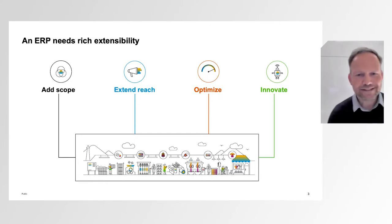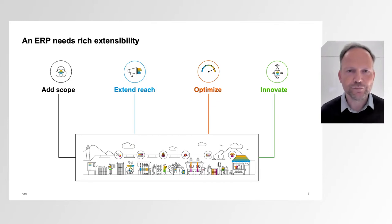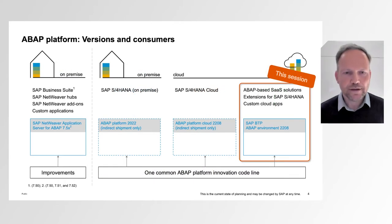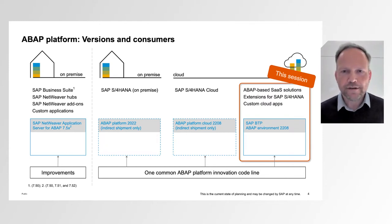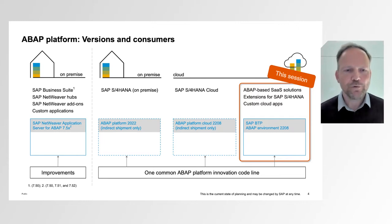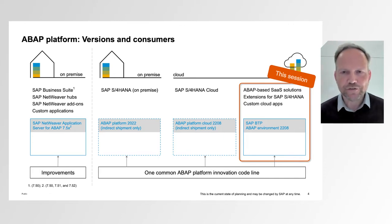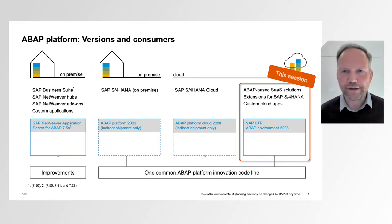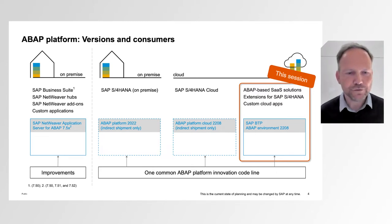I would like to start explaining the context of this session. It's all about extending ERP core applications using the ABAP platform. There is one common ABAP platform innovation code line, which is used for S/4HANA as indirect shipment and as direct shipment for our separate product on SAP Business Technology Platform. The official name of this separate product is SAP BTP ABAP Environment, but I will use the short name Steampunk because it's easier to use.